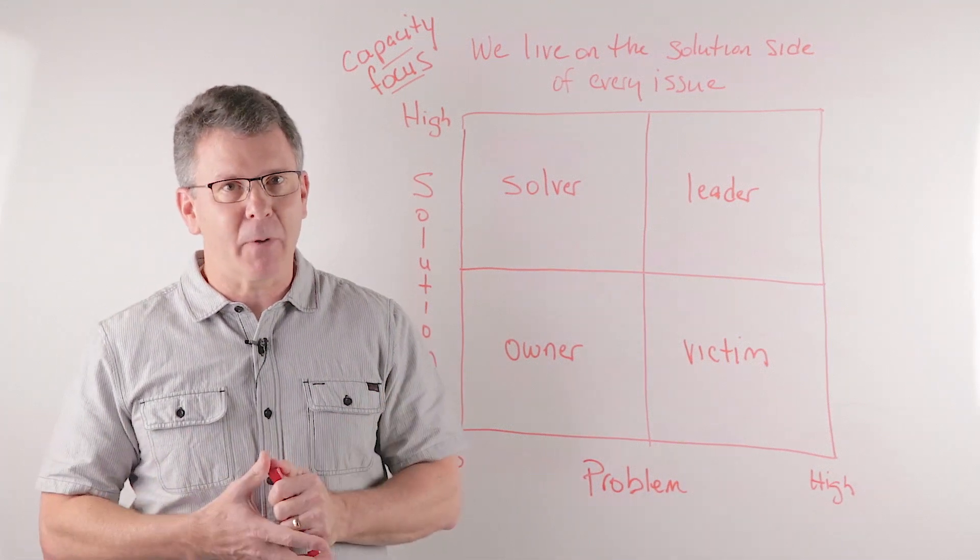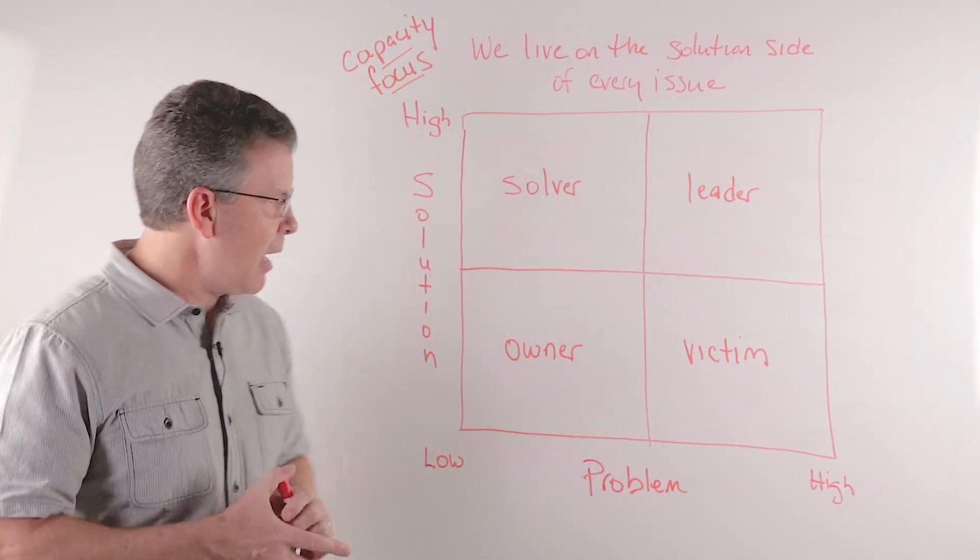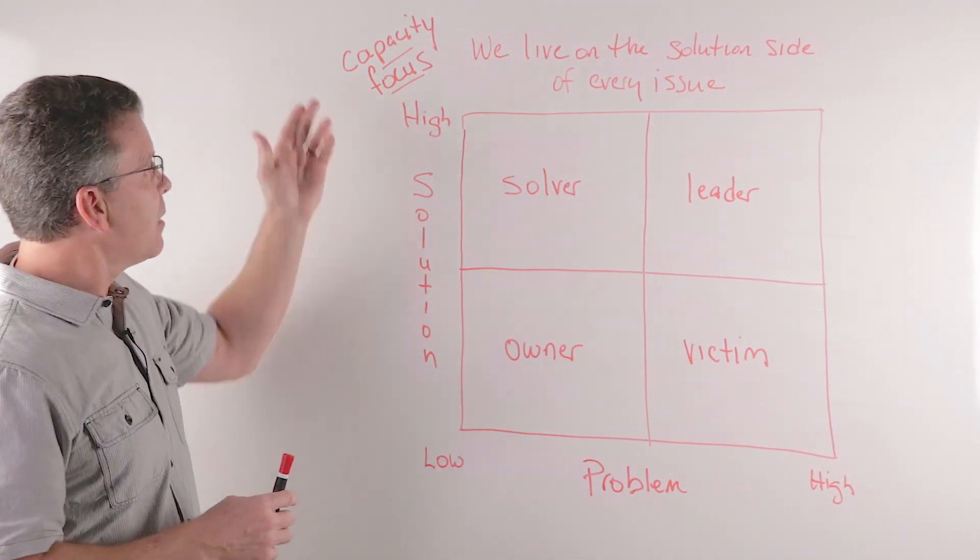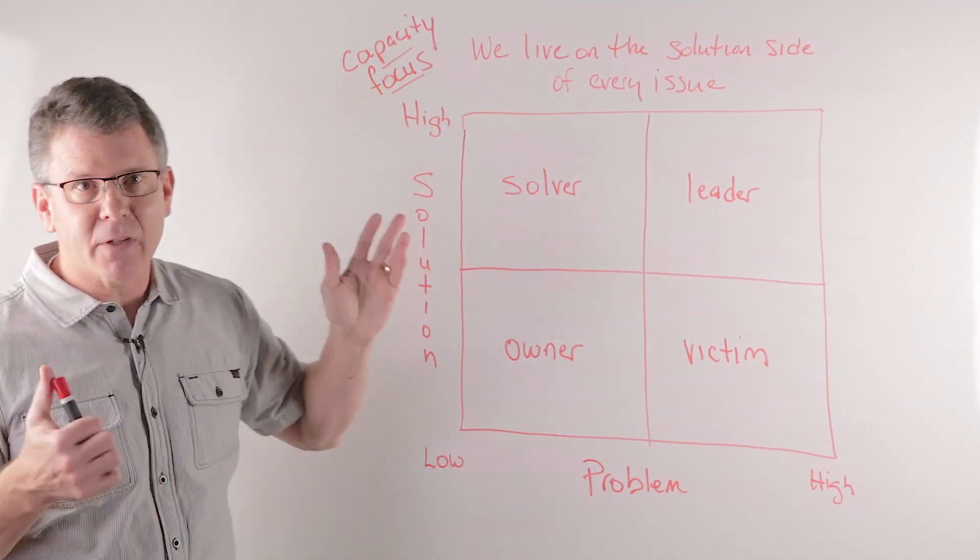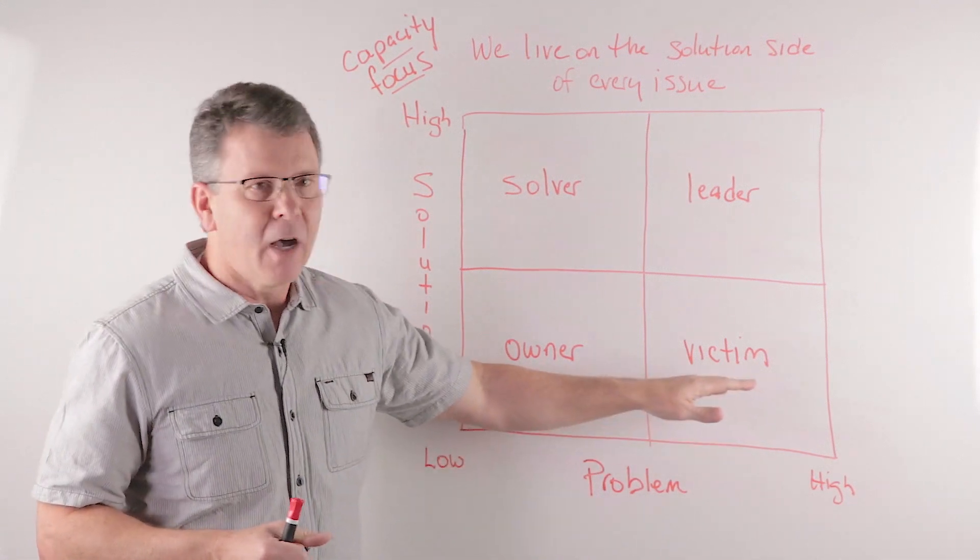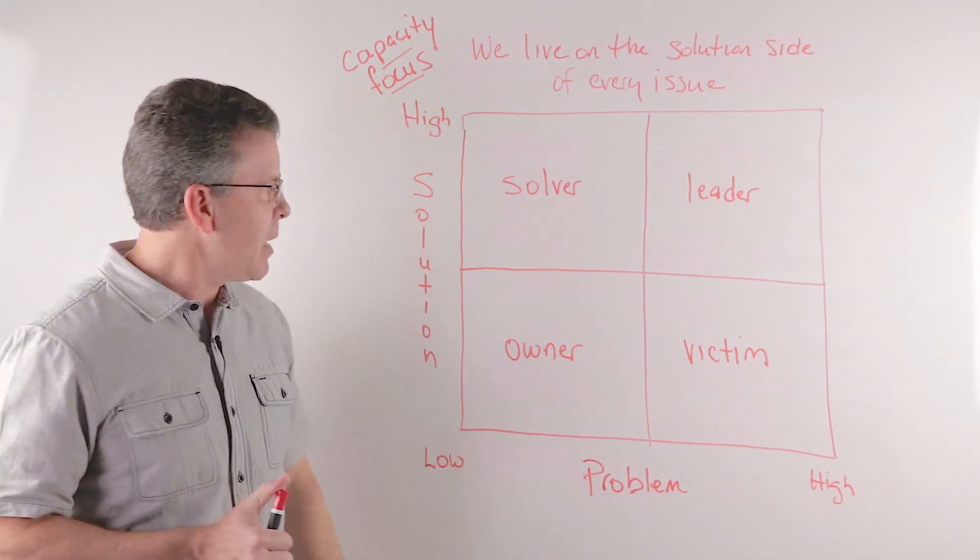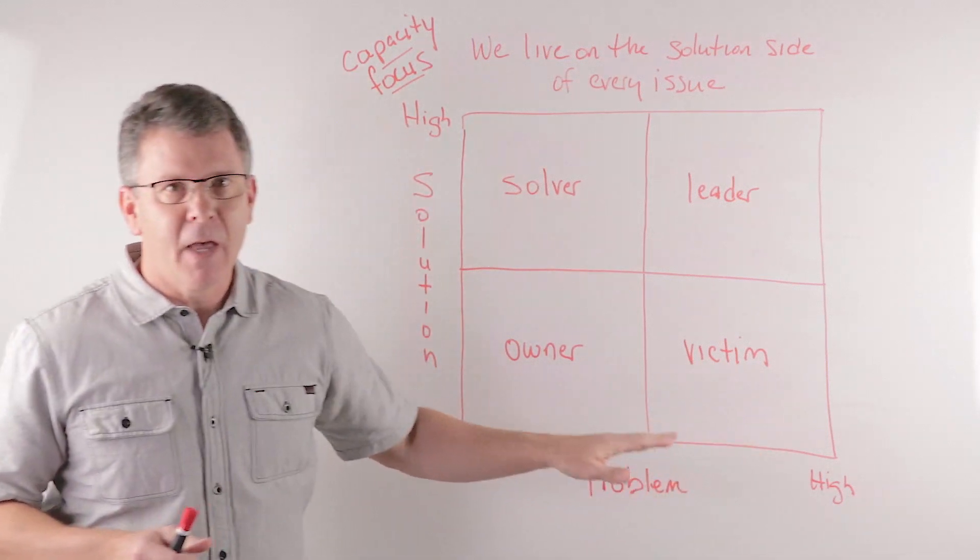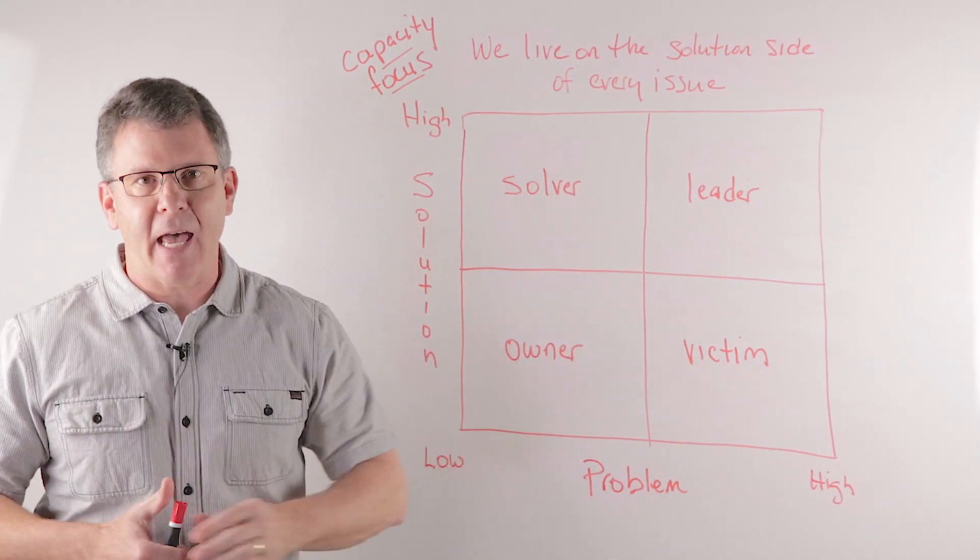And so you have different kinds of people in your leadership in your church. And what we've got here is a chart that talks about the capacity as well as the focus of people in the church. Some are very high focused on problems. They may not be high at solving the problem, but they're high at focusing the problem.